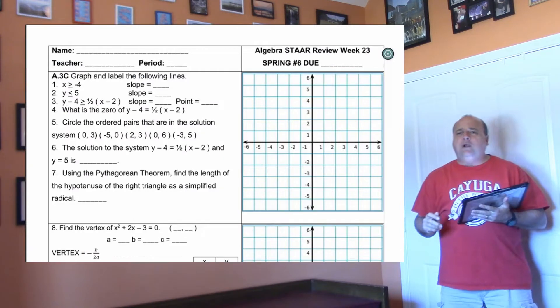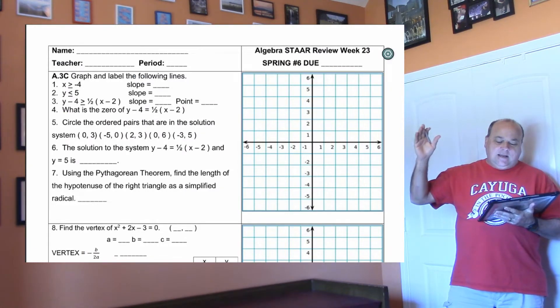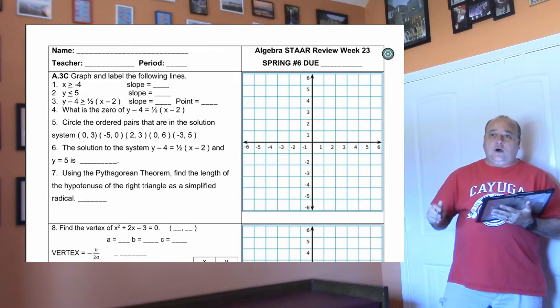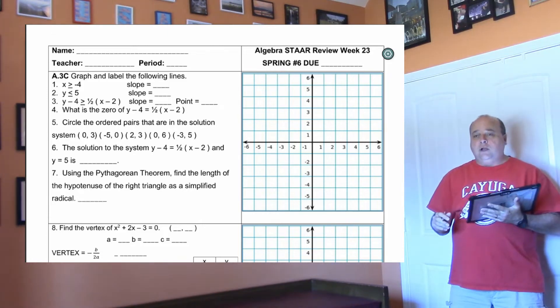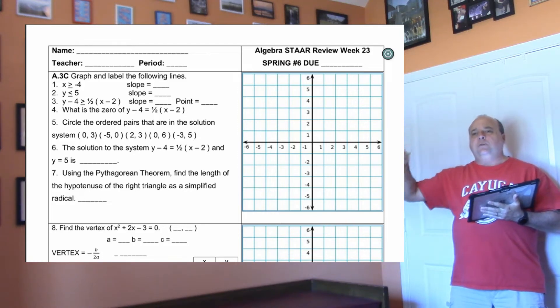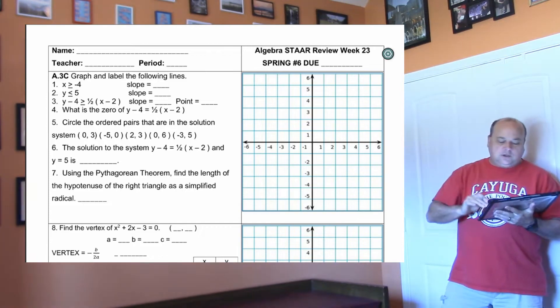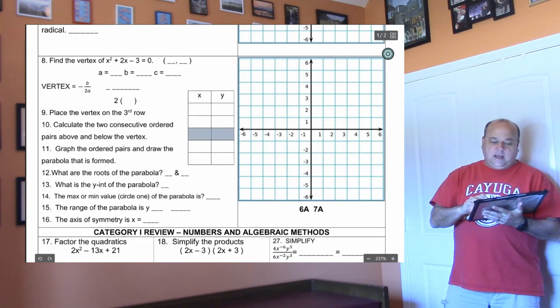A magical whiteboard appears and we are going to start rockin' through this Star Review. I am going to let you do one to seven on your own, because y'all have done this for three weeks in a row. Graph the lines, do a squared plus b squared equals c squared and simplify that radical. So you should be able to do that on your own. Let's go to number eight.